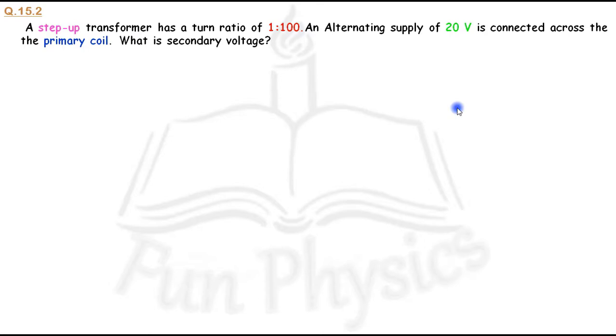We have a step-up transformer with a turn ratio of 1:100 and alternating voltage applied to the primary coil of 20 volts. In this question we have to find the secondary voltage.